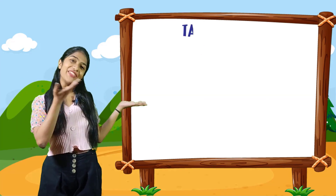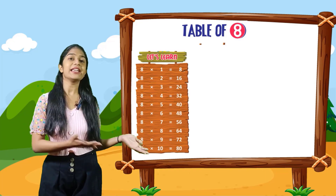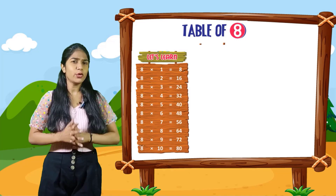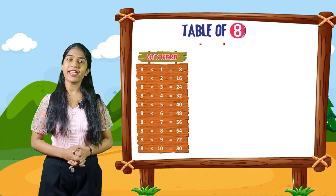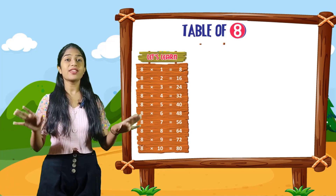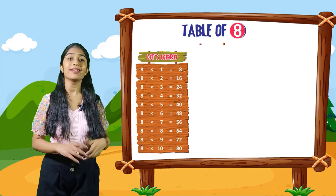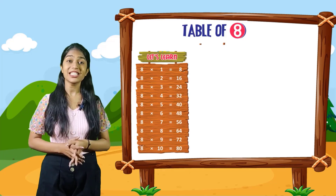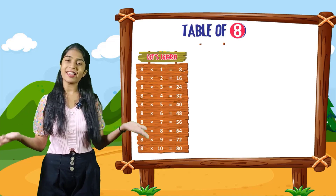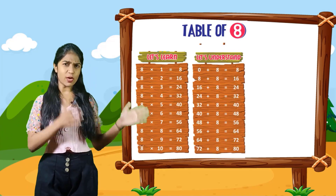So now we will do the table of 8. Let's learn. 8 into 1 is equal to 8. 8 into 2 is equal to 16. 8 into 3 is equal to 24. 8 into 4 is equal to 32. 8 into 5 is equal to 40. 8 into 6 is equal to 48. 8 into 7 is equal to 56. 8 into 8 is equal to 64. 8 into 9 is equal to 72. 8 into 10 is equal to 80.